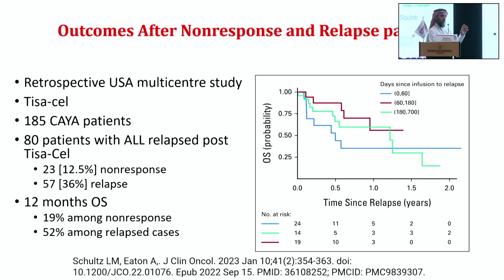Looking at the non-responder and relapse group: in a multicenter USA study using TISA-cell CAR-T in 185 children and young adolescents, 80 patients relapsed — 12.5% were non-responders and 36% relapsed. The 12-month overall survival was 19% for non-responders and 52% for relapsed cases, compared to more than 70% for the whole group in the Eliana study.